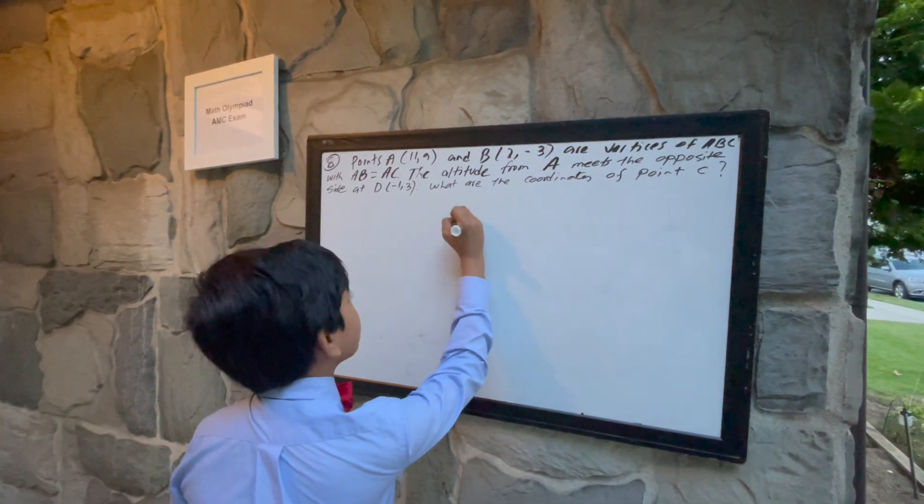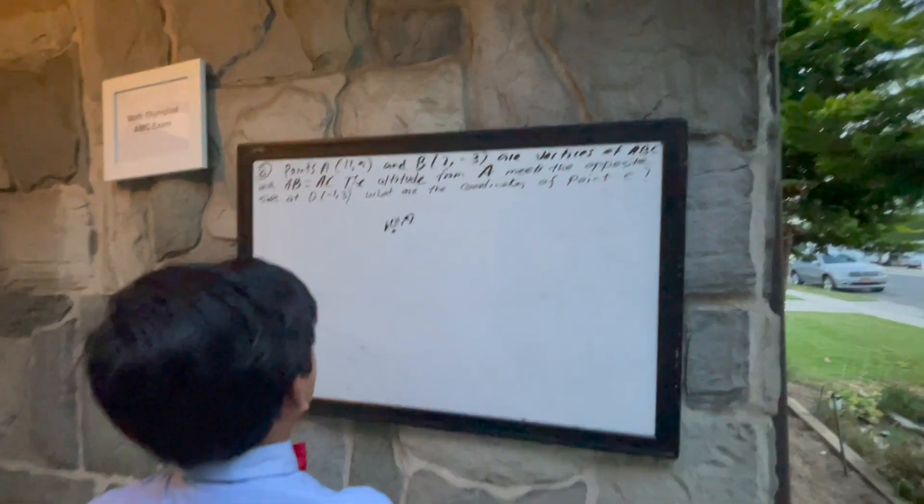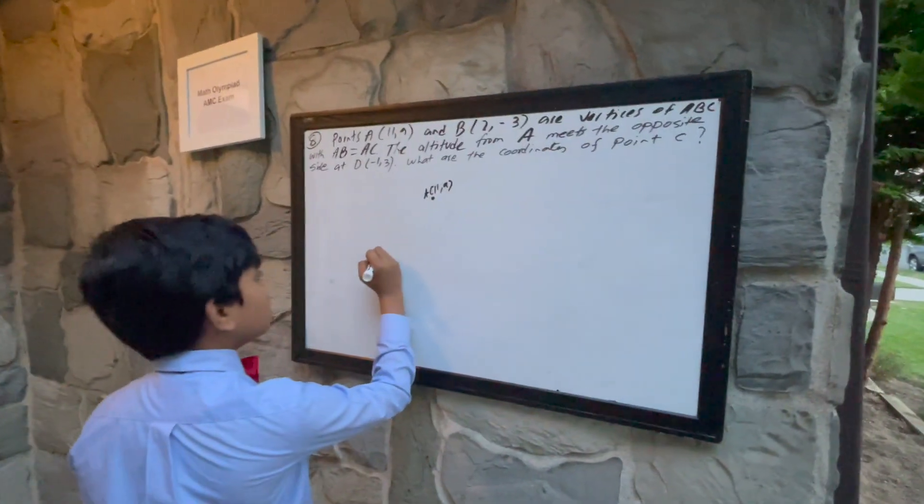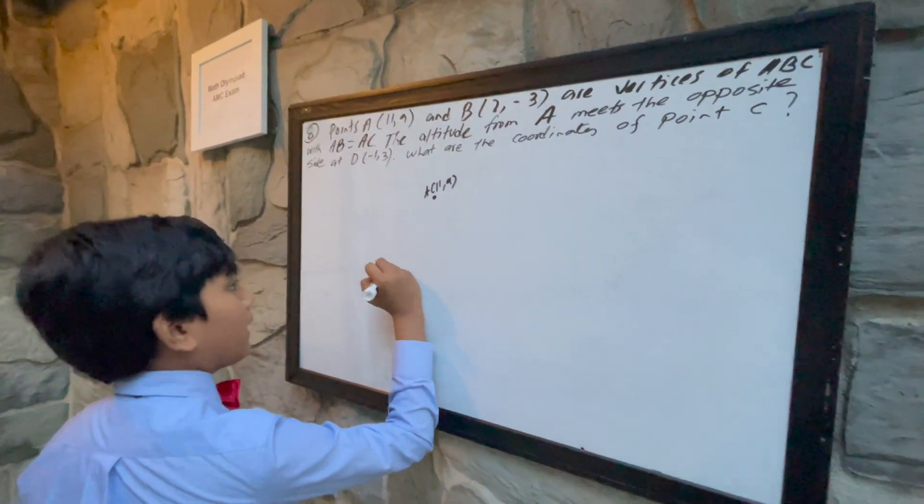A is (11, 9), let's say it's over here, and B is (2, -3), which would be about this.